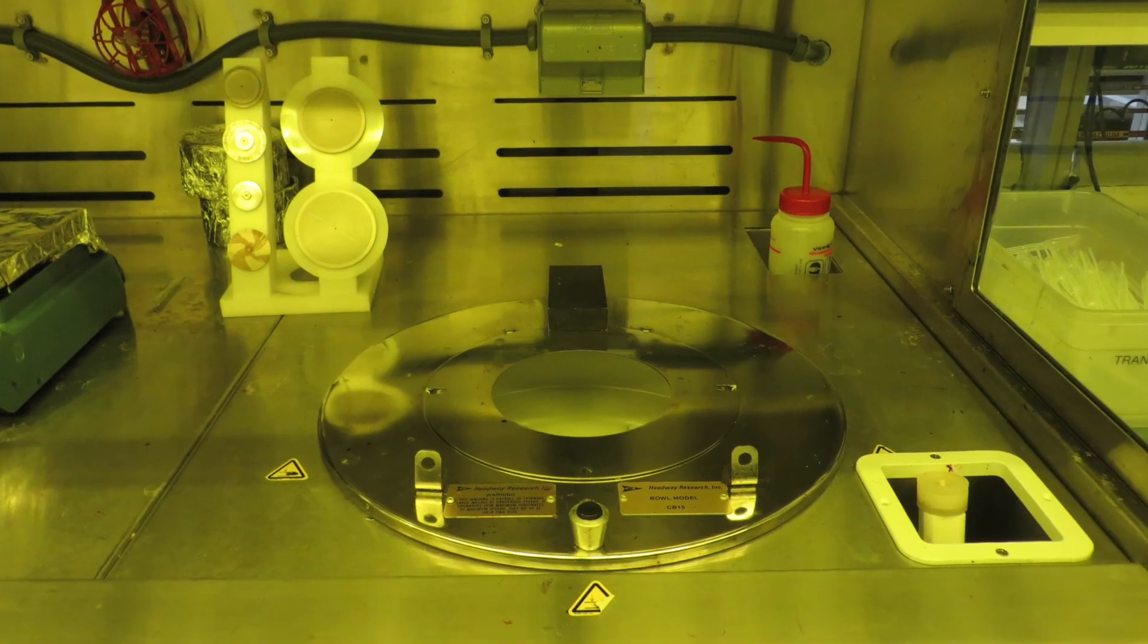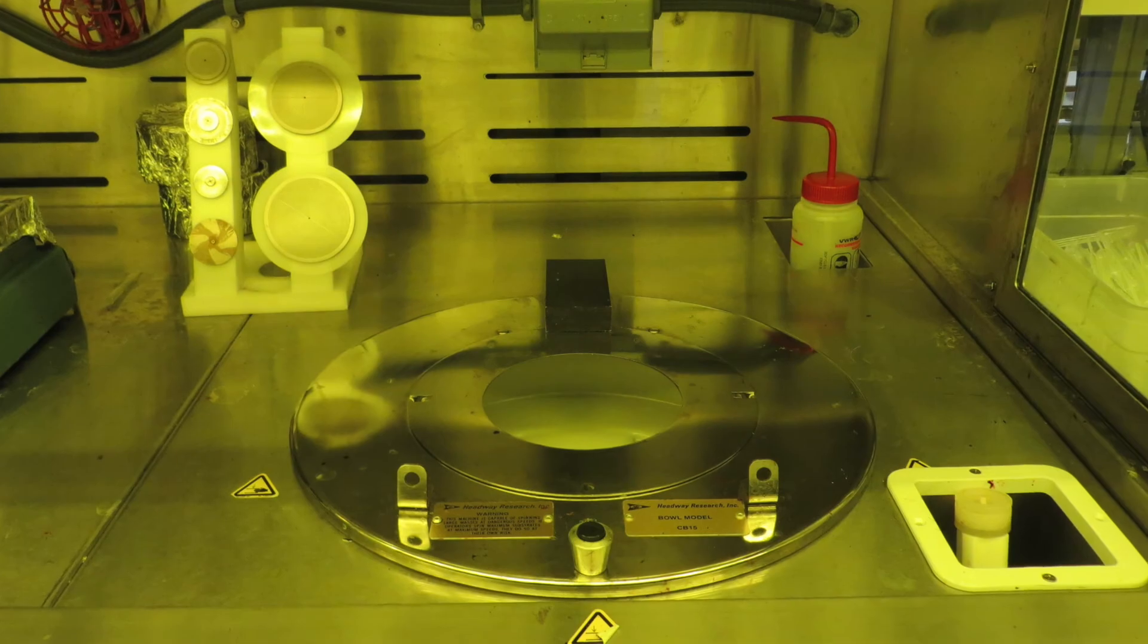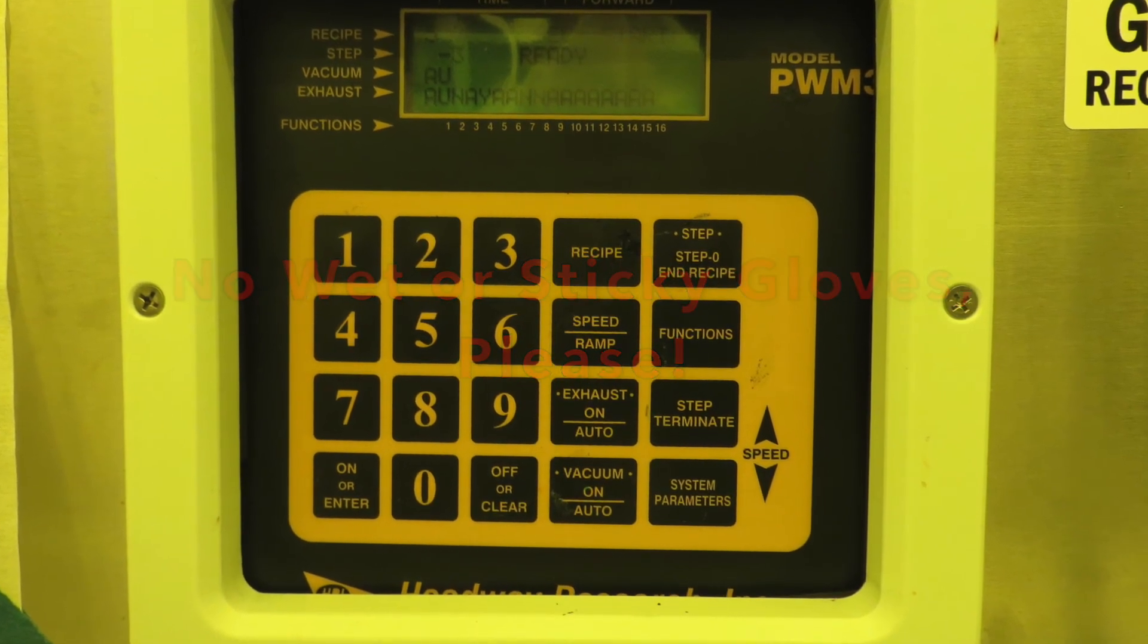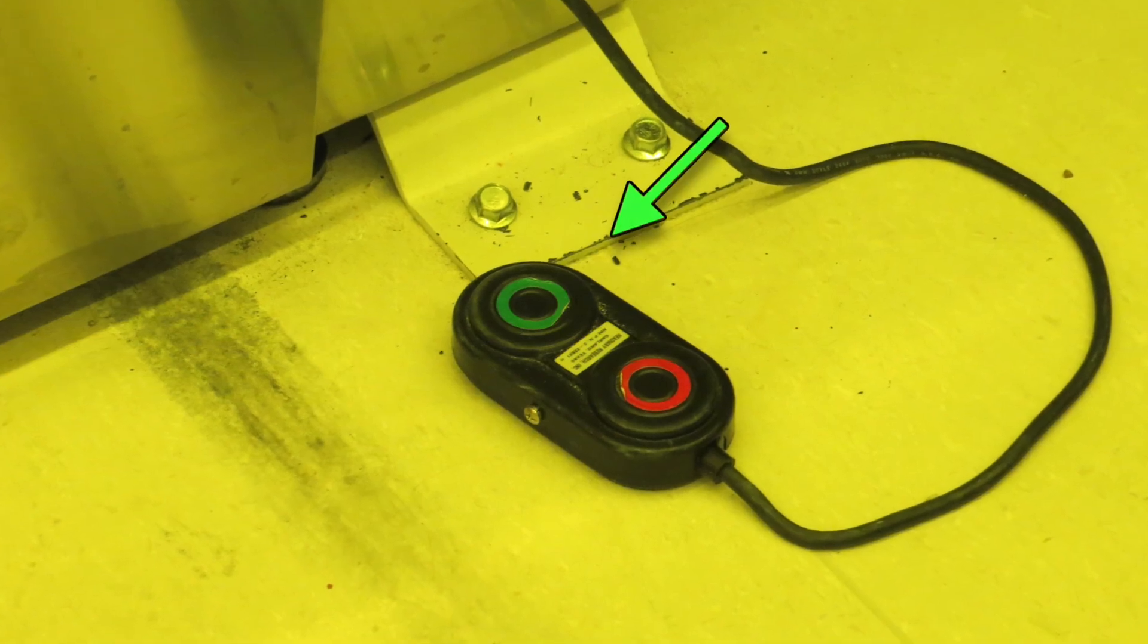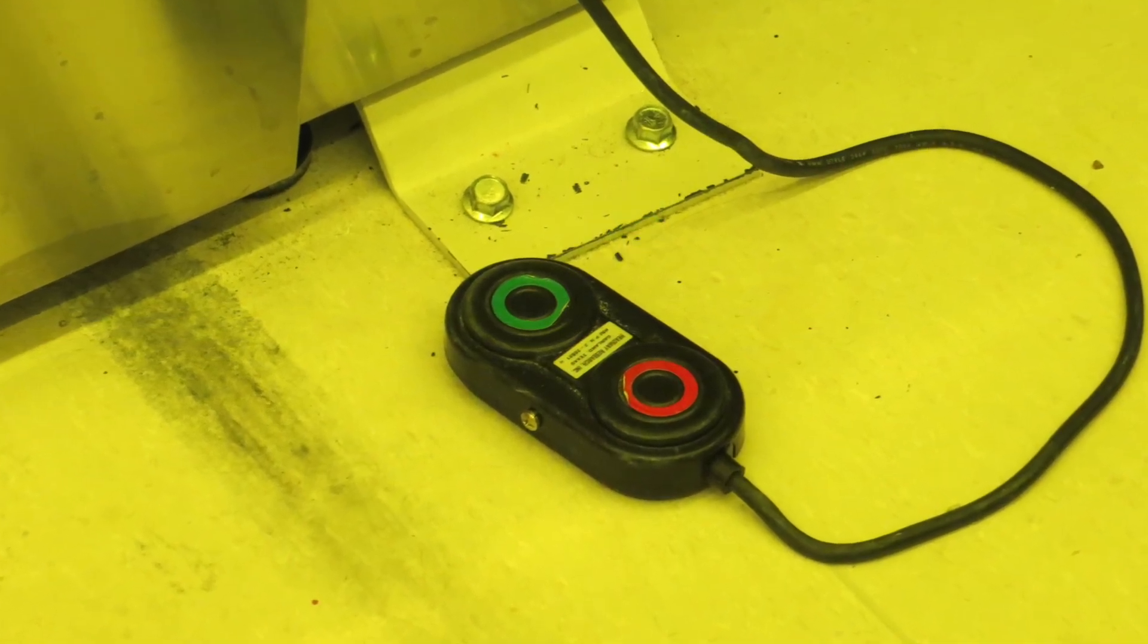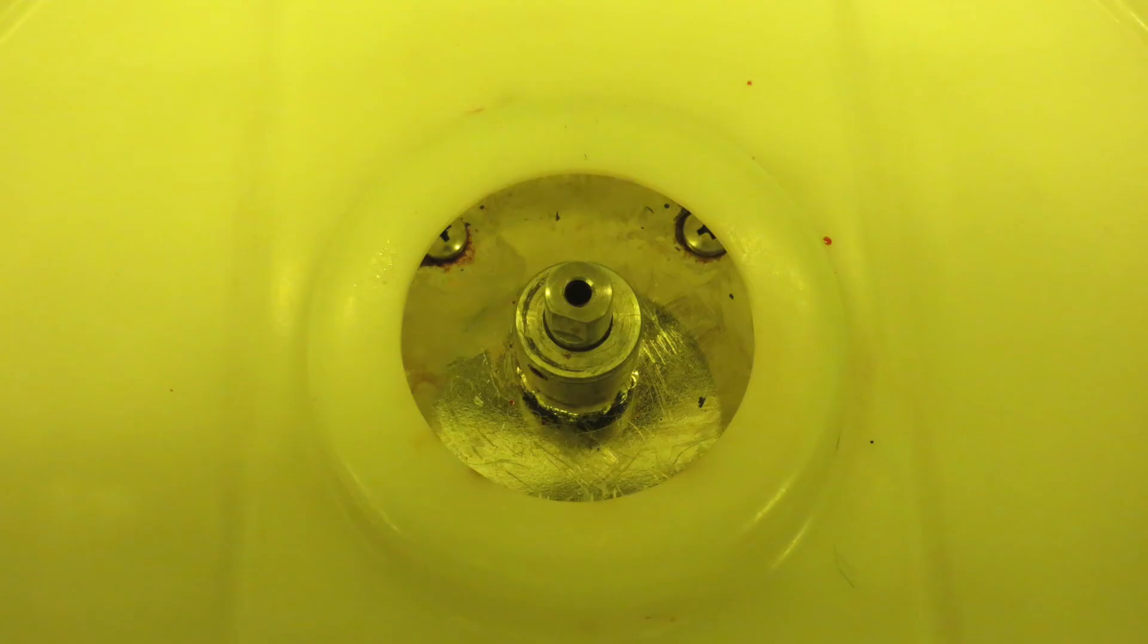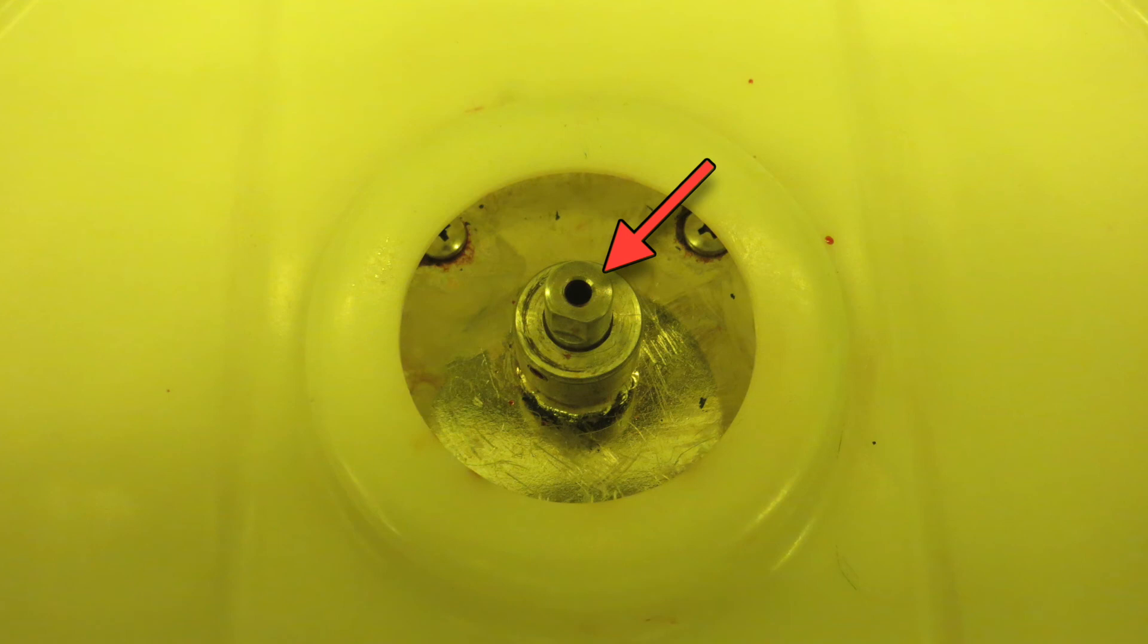The programming controls for the spinner are up above in the head casing of the wet bench. A green foot switch down below starts the automatic spin process. The red foot switch kills the process if necessary.